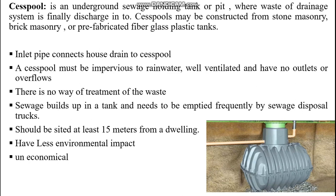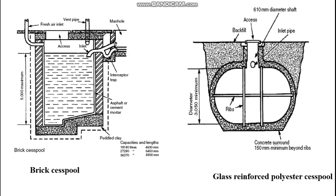A cesspool must be impervious to rainwater, well ventilated, and have no outlets or overflows. There is no treatment of waste — sewage builds up in the tank and needs to be emptied frequently by sewage disposal trucks. It should be sited at least 15 meters from a dwelling. Cesspools have less environmental impact and are uneconomical. Types include glass-reinforced polyester cesspools and brick cesspools.